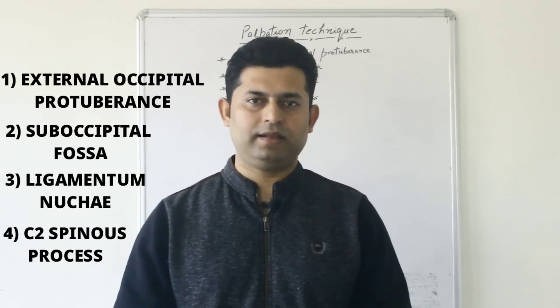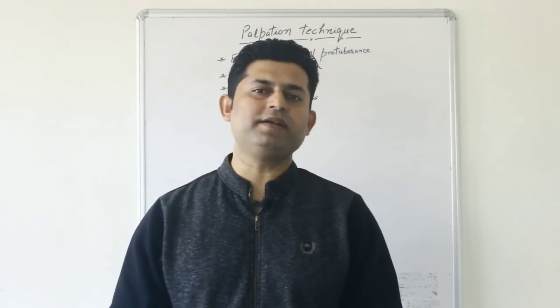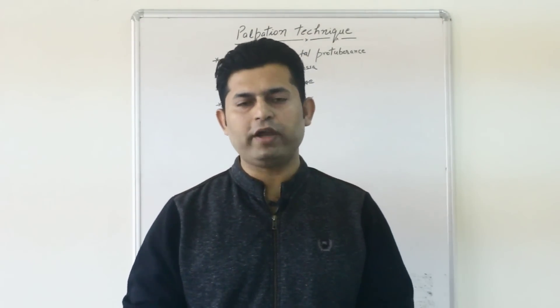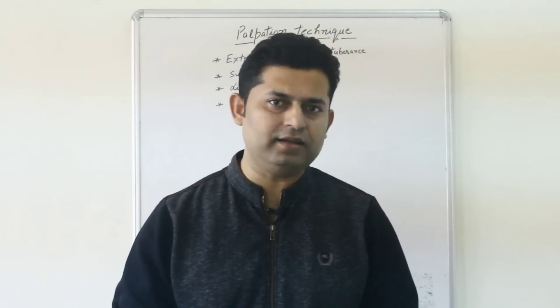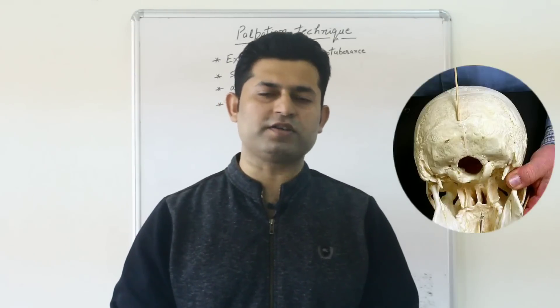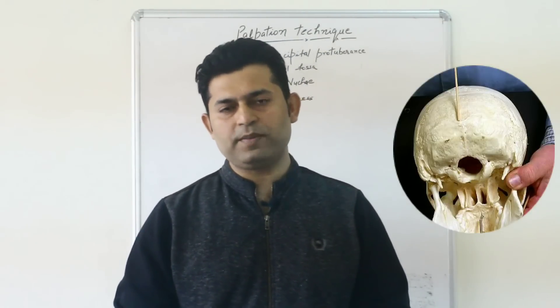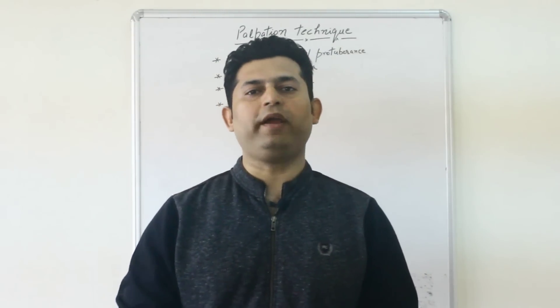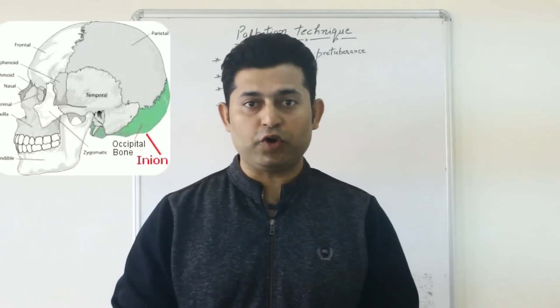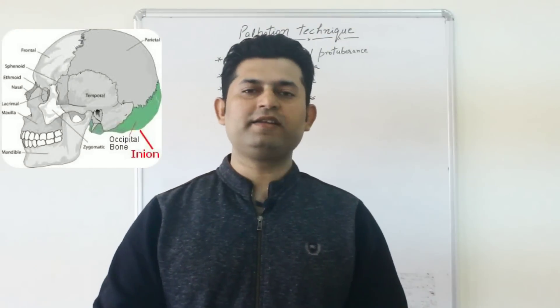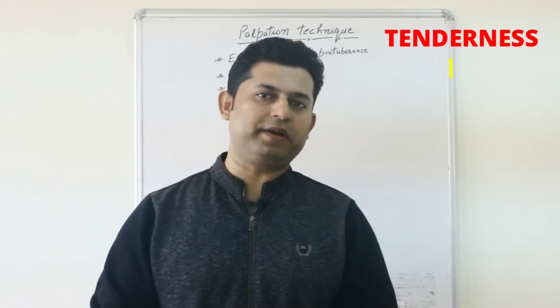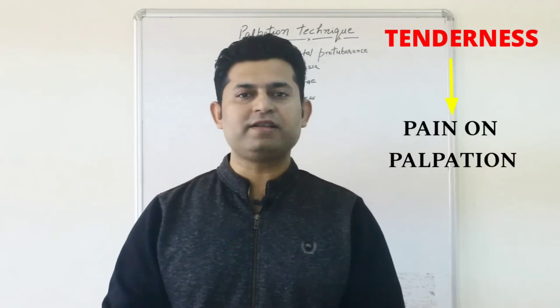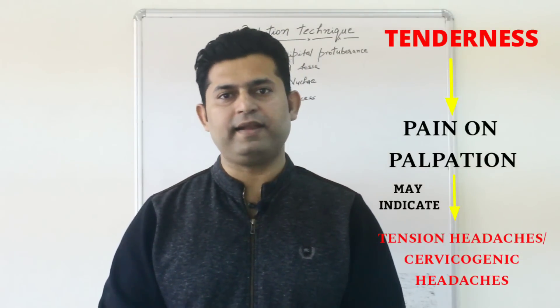The external occipital protuberance is present in the posterior inferior part of the skull, near the middle of the squamous part of the occipital bone. It serves as the insertion point for the trapezius muscle as well as the ligamentum nucae. The highest point of the external occipital protuberance is known as the inion. Tenderness to palpation at this level can be an important sign to confirm tension headaches as well as cervicogenic headaches.